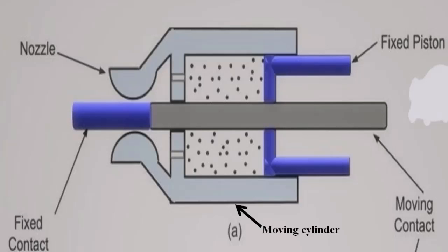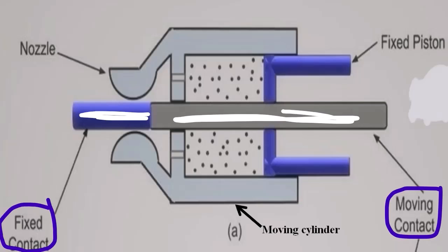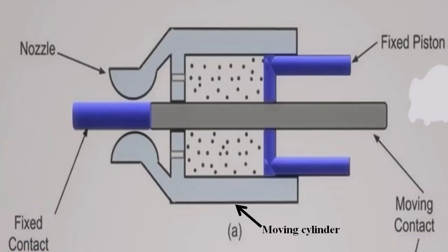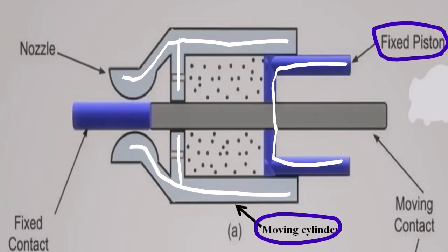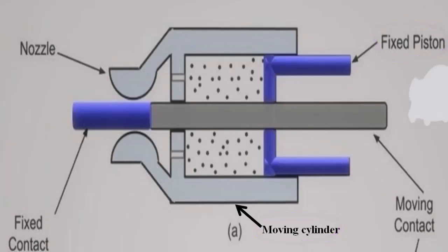So first, the power type SF6 circuit breaker construction. As a normal circuit breaker, there is a fixed contact and moving contact, and a moving cylinder and fixed position. So in this moving cylinder and fixed position...